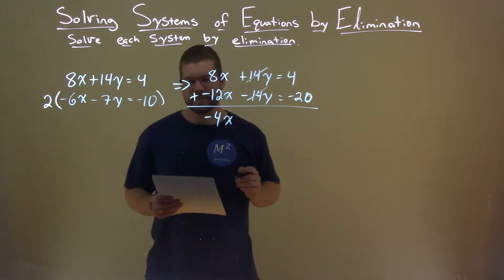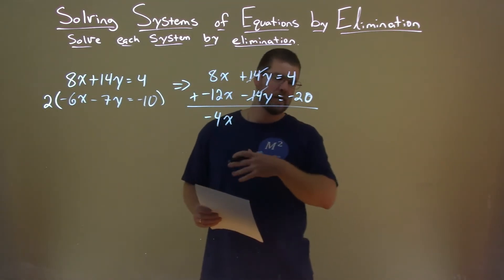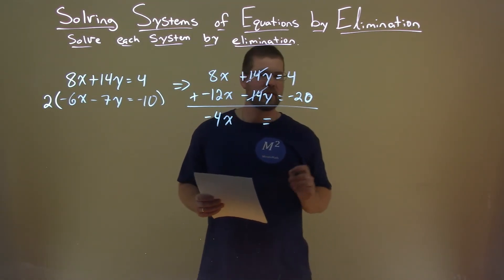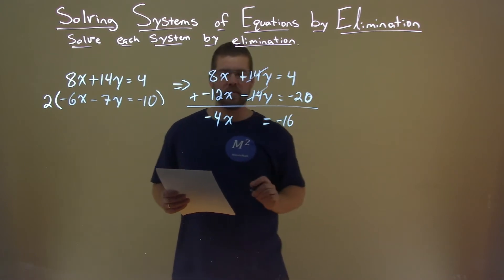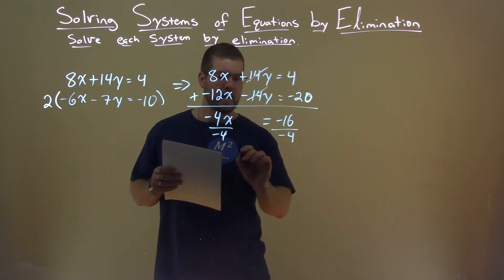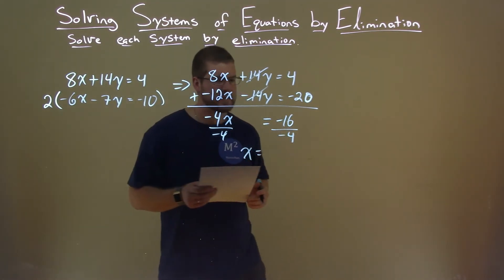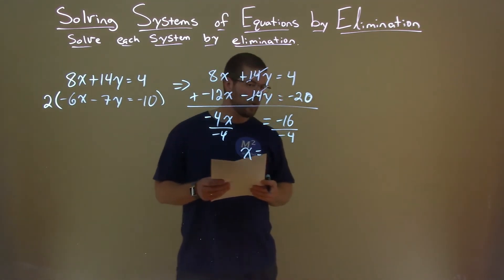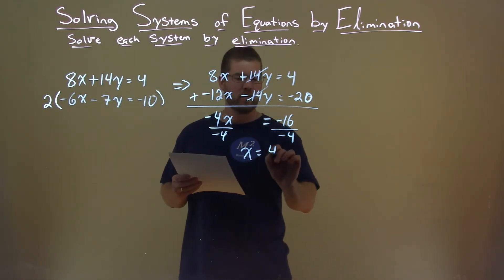14y's cancel here, right? 14y plus negative 14y cancels. And 4 plus negative 20 is negative 16. Divide both sides by negative 4. And x equals negative 16 divided by negative 4, which is positive 4.